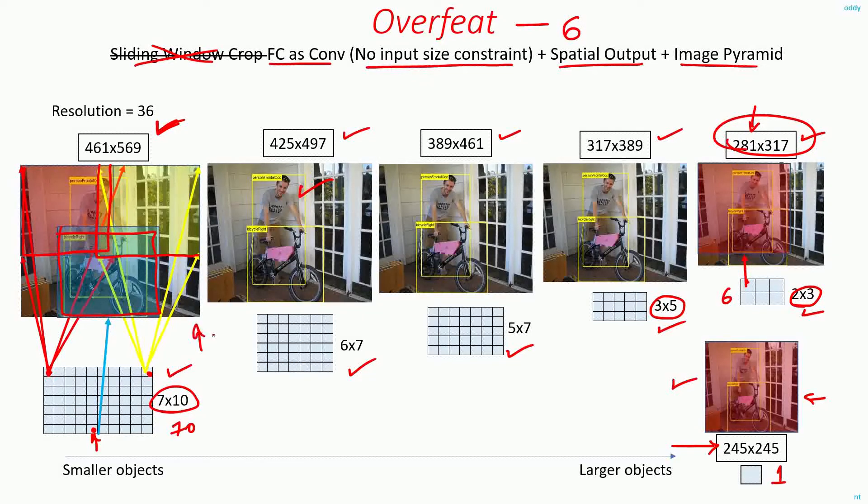And if the scale of the image is big, you will be able to detect smaller objects. And as the scale of the image gets smaller, you will be able to detect larger objects. So this is the intuition behind OverFeat.